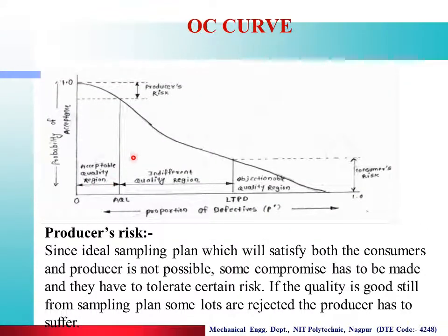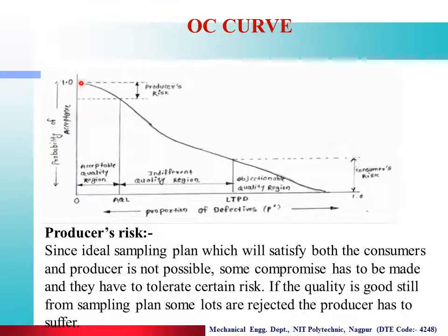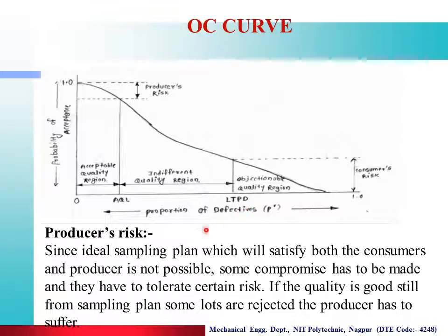This is also an Operating Characteristics Curve. On the X-axis there is Proportion of Defective from 0 to 1, and on the Y-axis there is Probability of Acceptance from 0 to 1. The curve is drawn accordingly. There are 6 key elements: 1. Acceptable Quality Level, 2. Indifferent Quality Region, 3. Objectionable Quality Region, 4. Producer Risk, 5. Consumer Risk, 6. LTPD. We will see all these concepts in detail one by one.